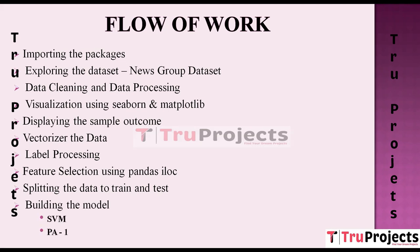The first algorithm used in the project is SVM — Support Vector Machine. SVM is a popular machine learning algorithm used for classification tasks. It works by finding a hyperplane that best separates data into different classes while maximizing the margin between them. SVMs are effective for text classification as they handle high-dimensional data and are particularly useful when there is a clear separation between classes.